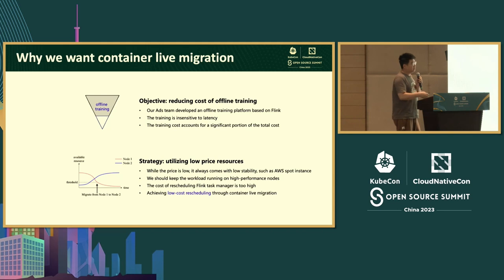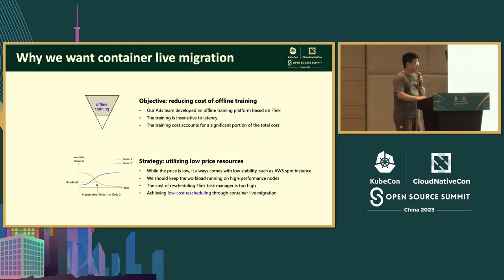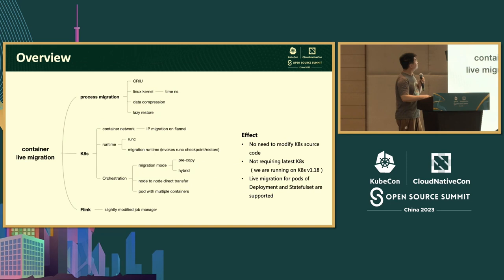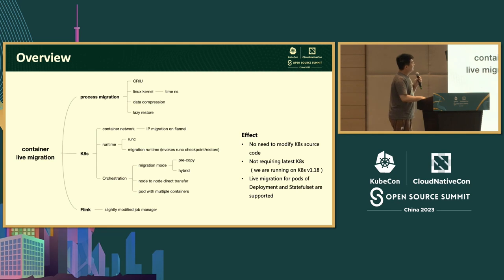We run workloads on cheap low-priority internal Tencent resources. However, cheap resources are unstable — similar to AWS spot instances. Because resources are unstable, we still want jobs to run long-term on nodes with sufficient resources. This requires us to periodically reschedule Flink Task Managers. But in the existing Flink architecture, rescheduling a single Task Manager has very high overhead — it may involve data loss or a full job recovery. We want to achieve low-overhead rescheduling through live migration.